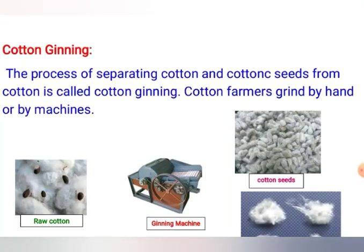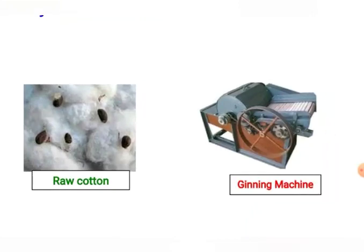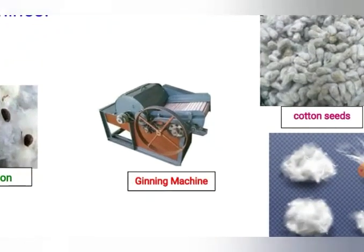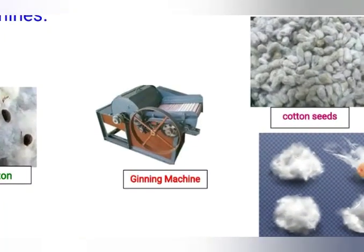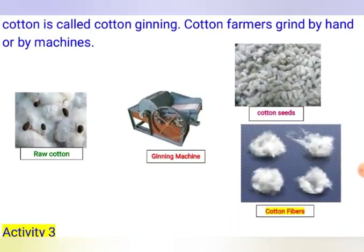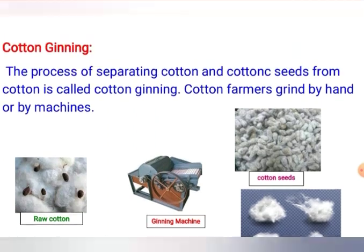The next topic is cotton ginning. The process of separation of cotton fiber and cotton seeds is called cotton ginning. The cotton obtained from cotton balls contains fiber wrapped all around the seeds. Farmers can gin it by hand, but these days machines are available for ginning. In the ginning machine, the raw cotton is introduced and the machine separates the cotton seeds and cotton fibers. This separation is known as cotton ginning.